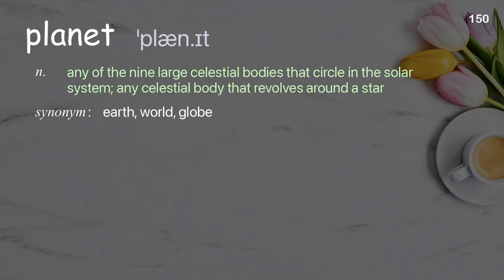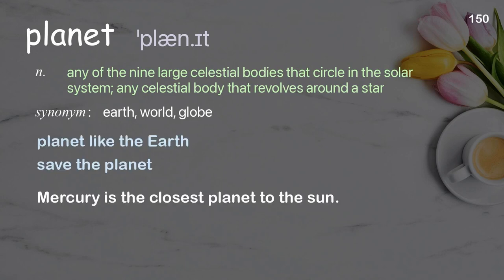Planet: any of the large celestial bodies that circle in the solar system; any celestial body that revolves around a star. Examples: planet like the Earth, save the planet. Mercury is the closest planet to the sun.